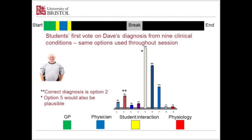This is the result of the vote from this year's cohort at the first voting point. The correct diagnosis we're working towards is option two, and option five would also be plausible. But the students — and indeed the GP — don't have enough information at this moment to make that diagnosis, so there's a fairly wide spread in how students are thinking diagnostically.